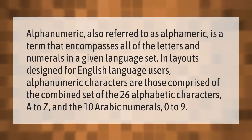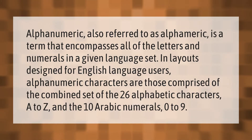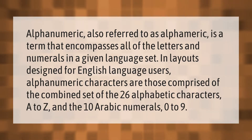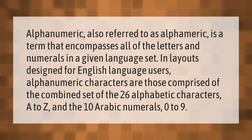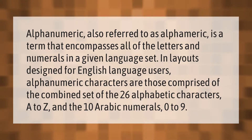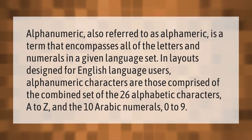Alphanumeric, also referred to as alphameric, is a term that encompasses all of the letters and numerals in a given language set. In layouts designed for English language users, alphanumeric characters are those comprised of the combined set of the 26 alphabetic characters A to Z and the 10 Arabic numerals 0 to 9.